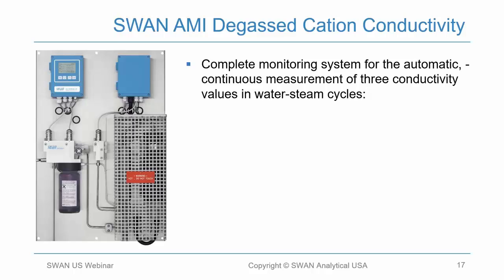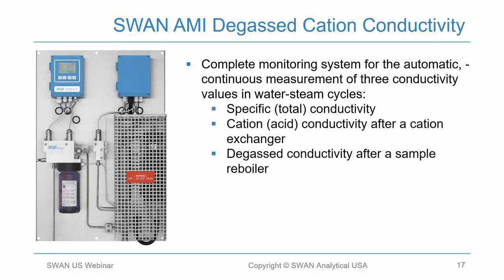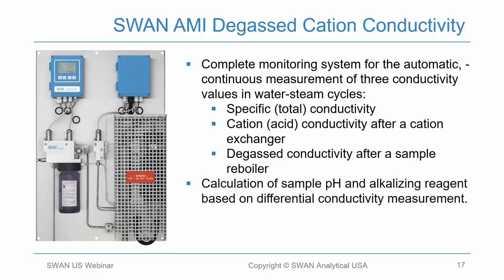The SWAN AMI degas cation conductivity is a complete monitoring system for the automatic continuous measurement of three conductivity values as well as a few other parameters. It measures specific conductivity, cation conductivity after the cation exchanger, and degas conductivity after the reboiler for your degas cation conductivity. It also calculates sample pH by differential conductivity and calculates the concentration of your alkalizing agent — in this case, ammonia.